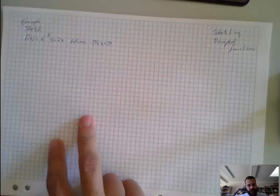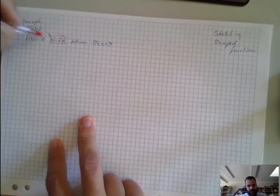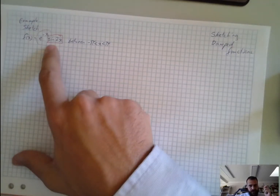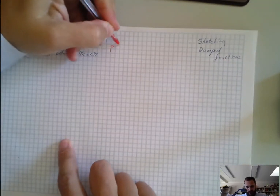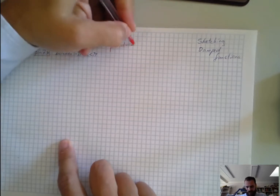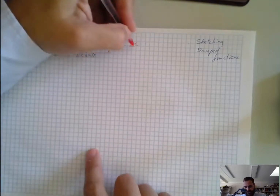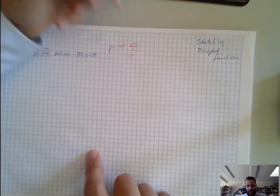So the first thing I'd do is probably just look at the periodic function first and then deal with the exponential later. So sine 2x — that's going to have a period equal to 2π/b, which in this case is 2. So the period is going to be π.